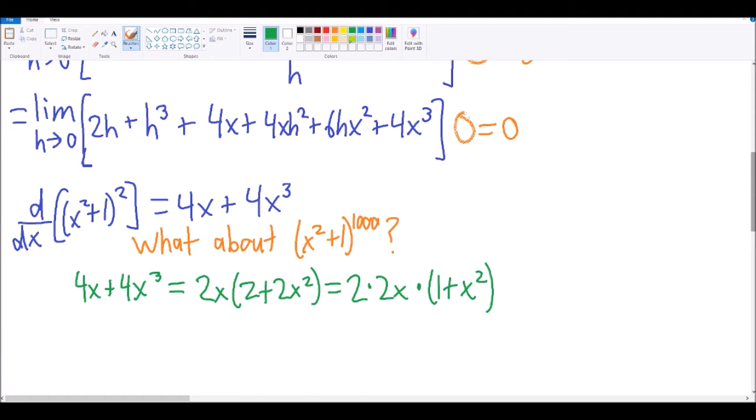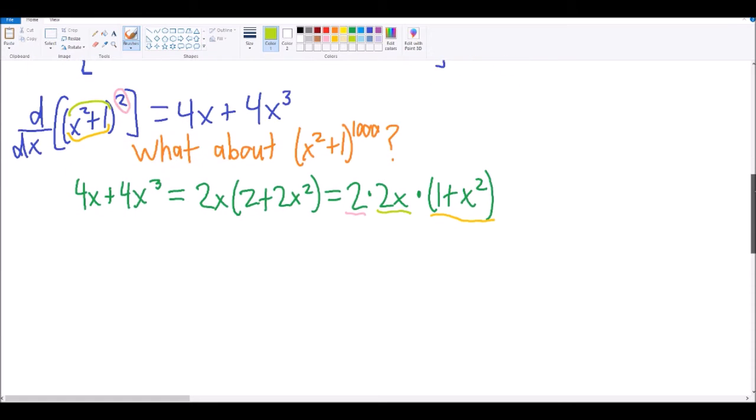Well, would you look at that. It's like we treated x squared plus 1 like a separate function, with the squared part being what we cared about. We took the derivative using the power rule from before, and then multiplied by the derivative of the x squared plus 1 part. And actually, that's exactly what the chain rule says to do.